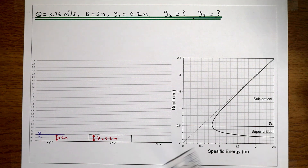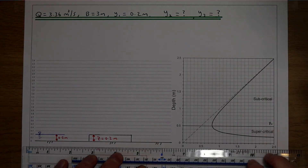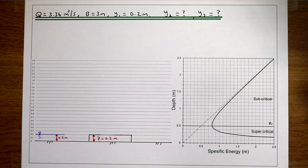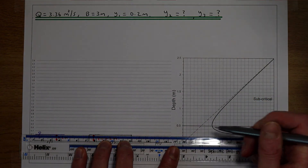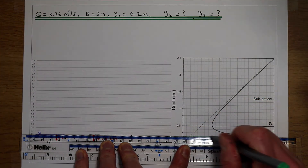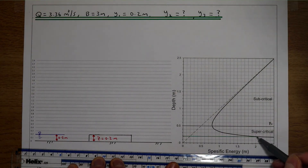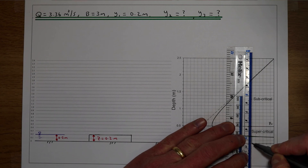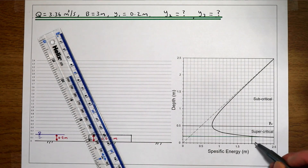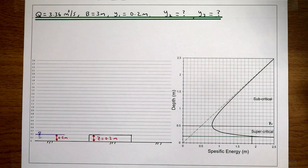We can use the depth-energy relationship to see what's going to happen to the flow depth as we go over this step. Following the same process as the previous examples, we're going to take the flow depth and plot it onto the depth-energy relationship to see where the 0.2 metre flow depth intersects that curve. At the point of intersection we draw a line down, which gives us our initial specific energy.